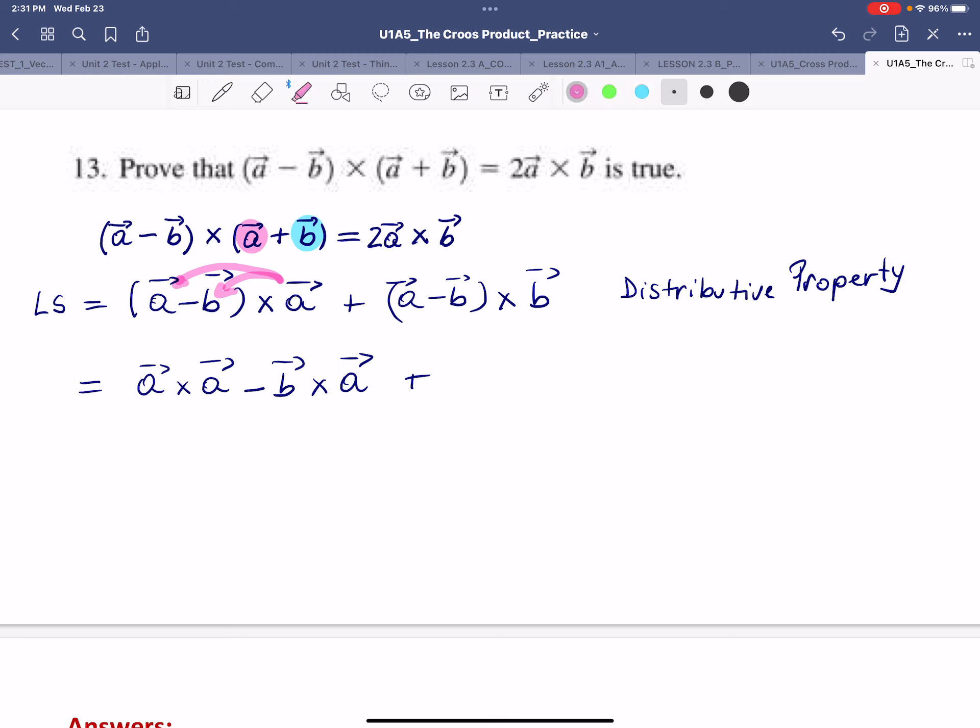In a similar way, we're going to cross vector B with A minus B, or vice versa. So we have A minus B cross B, which will be A cross B. And then, as you can see here, you have a minus, so that must be minus B cross B.